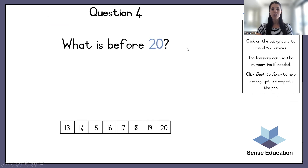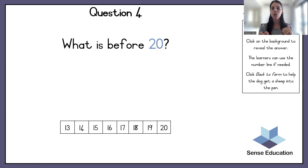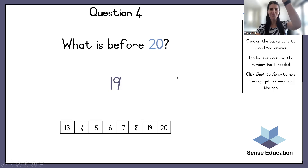What is before 20? What is before 20? Number 19. High five! Excellent.